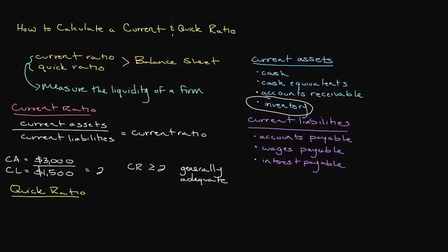In order to calculate the quick ratio, we still gather the current assets and the current liabilities of a firm. But prior to our calculations, we deduct inventory from current assets. That way, we're not assuming a firm's inventory will be there to assist in covering their current liabilities.